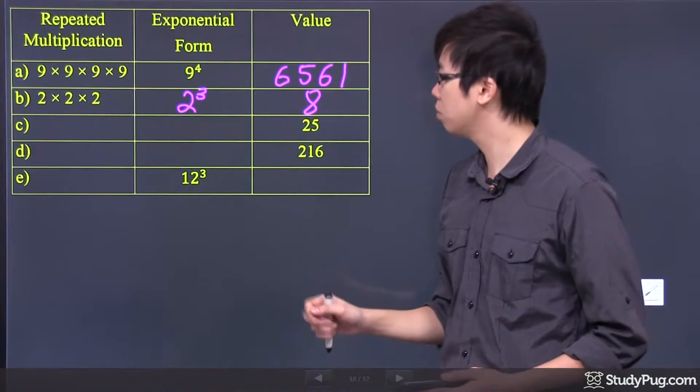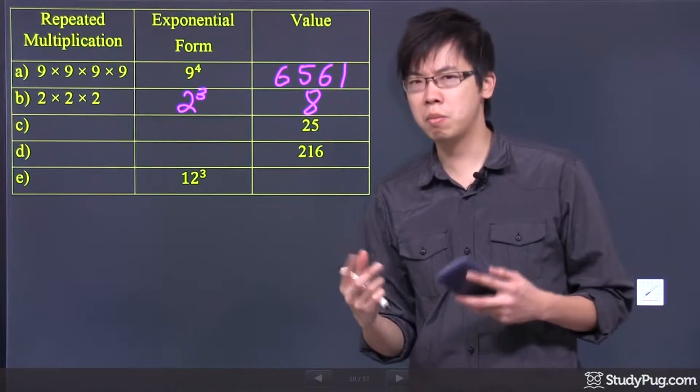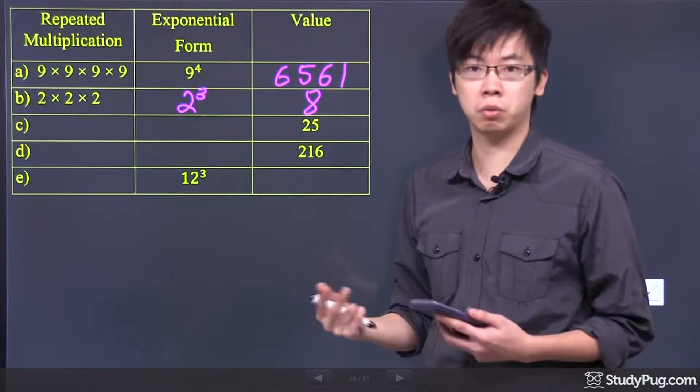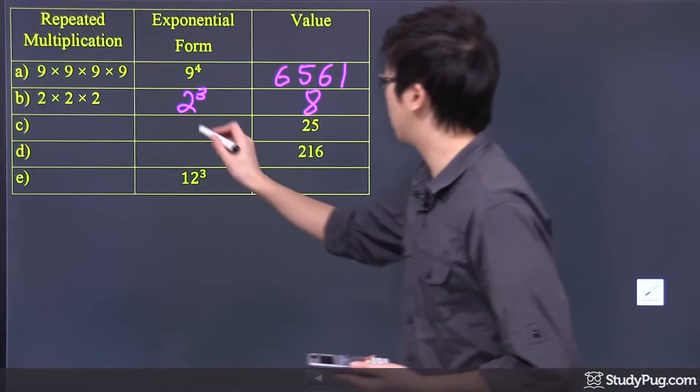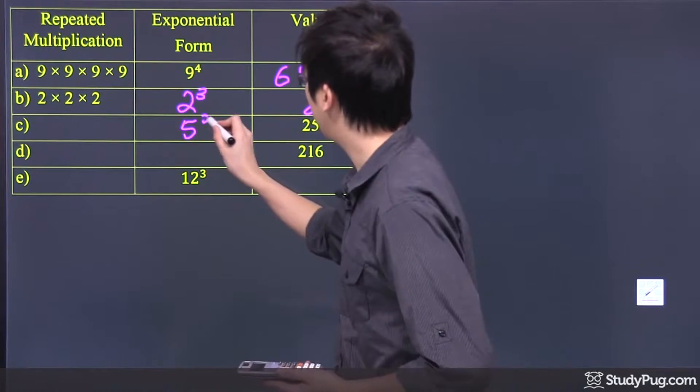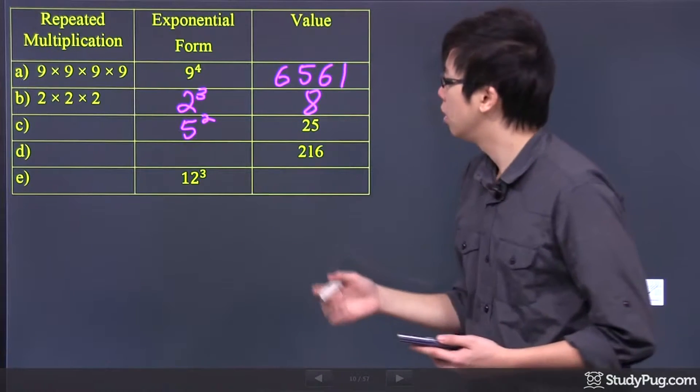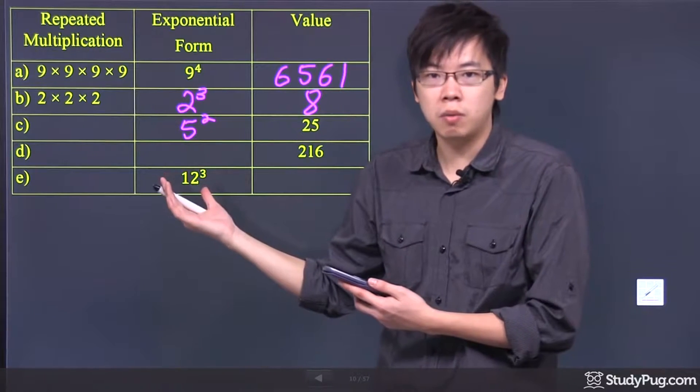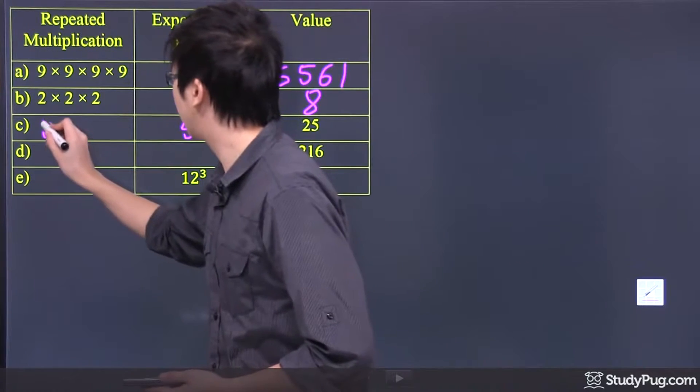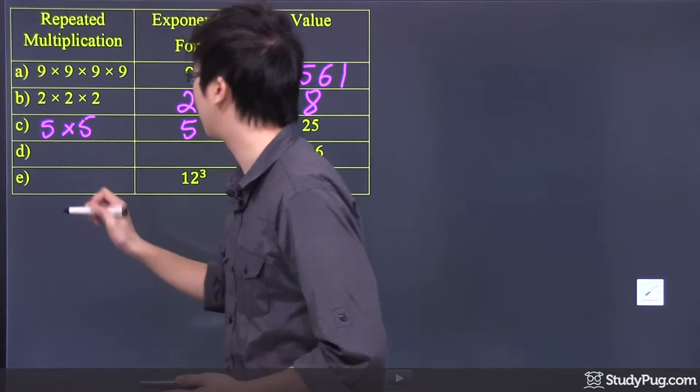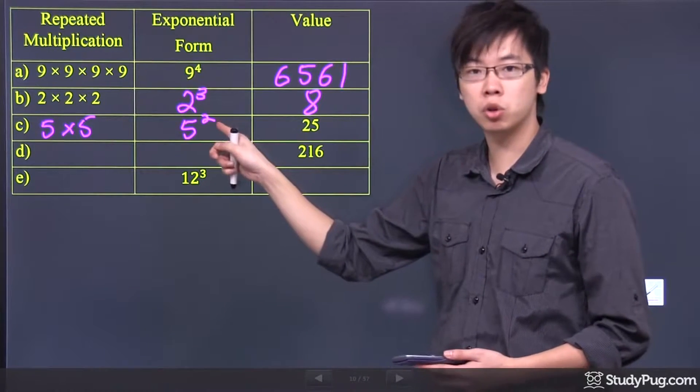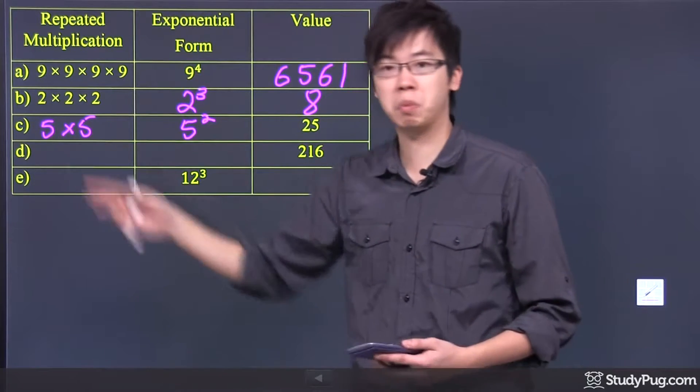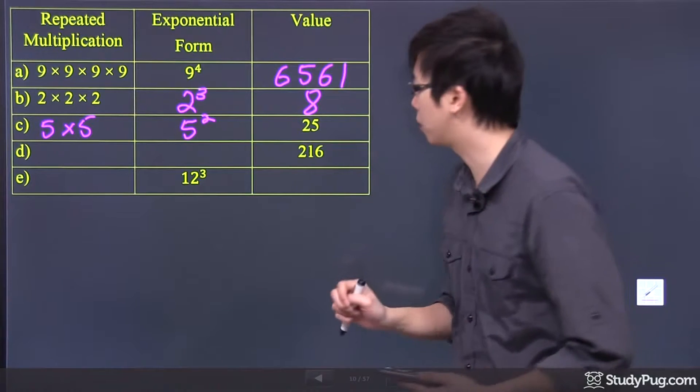We have 25 over here for the next question. So, is there any number here multiplied by itself, maybe 2 or 3 times, gives you 25? It's actually just 5 to the power of 2. You have to get used to all the powers. So, what is 5 to the power of 2? Well, it means it's 5 times 5. The 5 raised to the power of 2 means that the 5 is multiplied itself by 2 times.